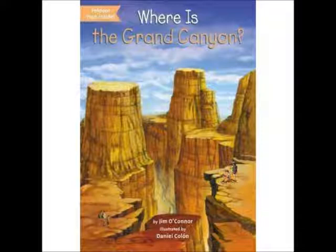Rainwater erosion also washes away softer layers of rock that have supported harder rock. The harder rock loosens and eventually falls down into the canyon. Wind has also played a part in shaping the canyon. Many of the mesas and buttes that are so amazing to see were formed by millions of years of wind brushing tiny bits of rock away one bit at a time.